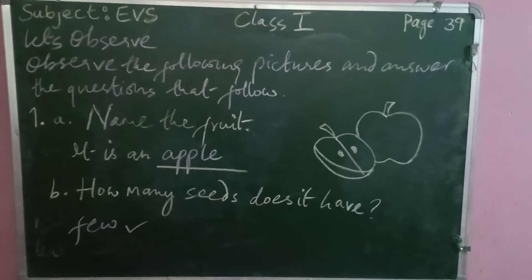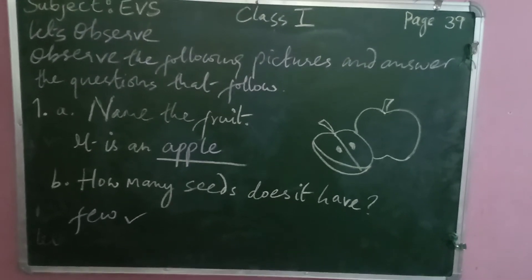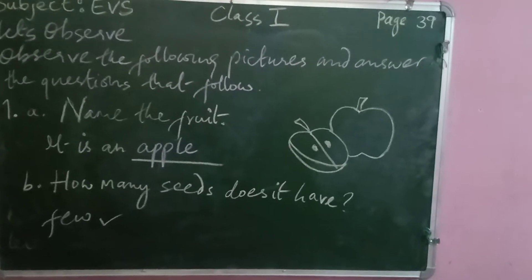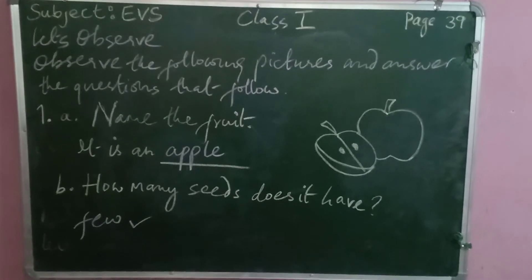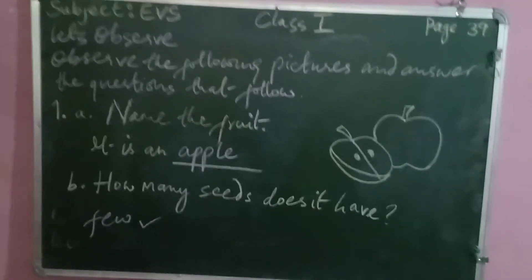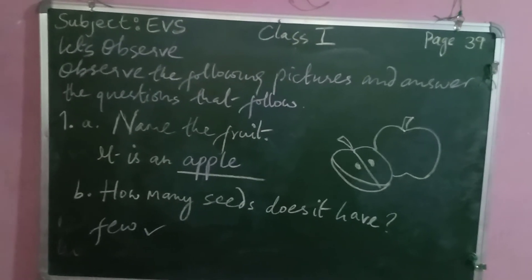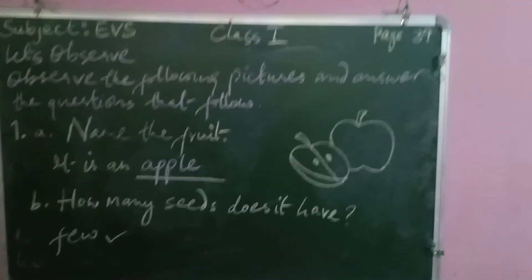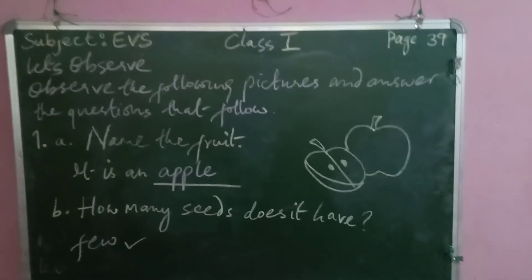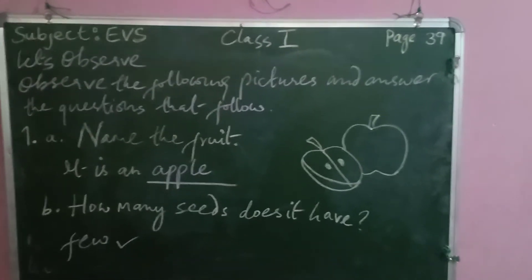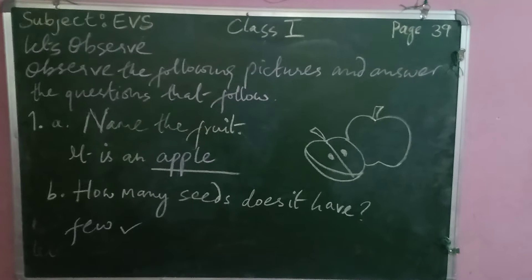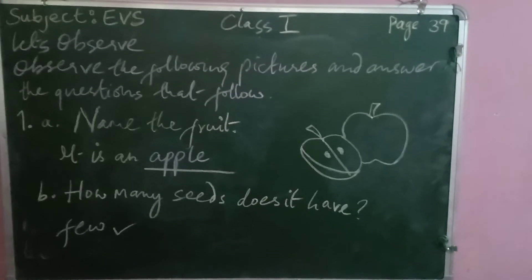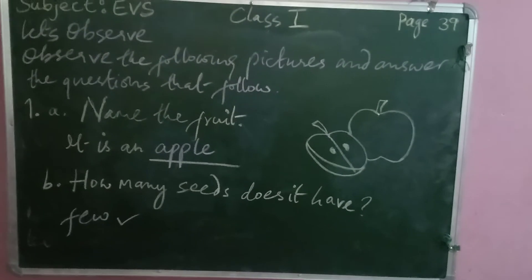Let's move to the observe section: observe the following pictures and answer the questions. Question one: name the fruit. Looking at the picture, it is an apple. How many seeds does it have? The options are one, few, and many — write few seeds, because apples have a few seeds, not one or many.